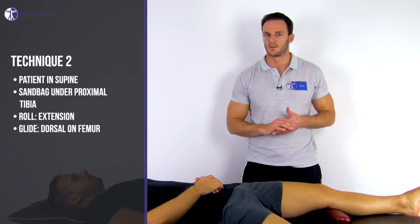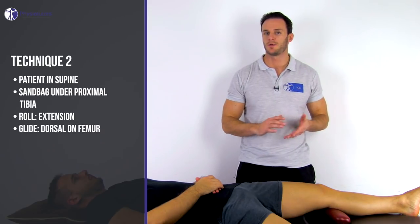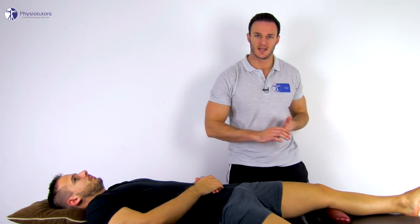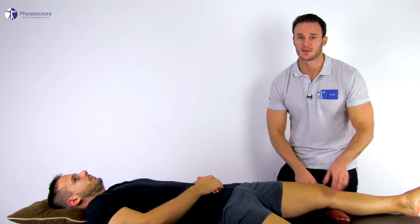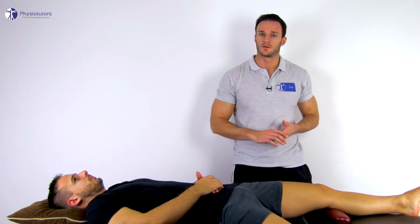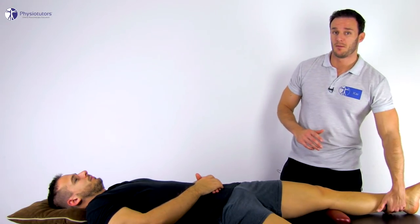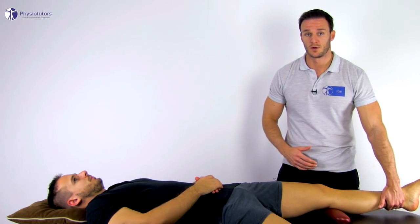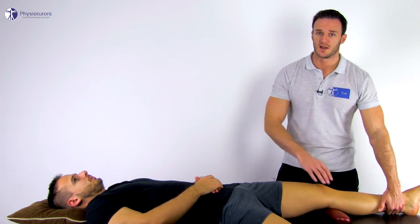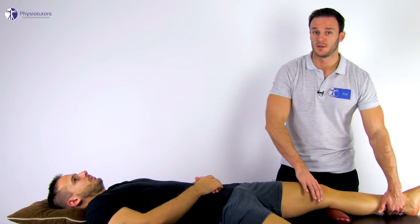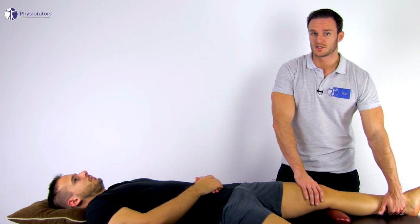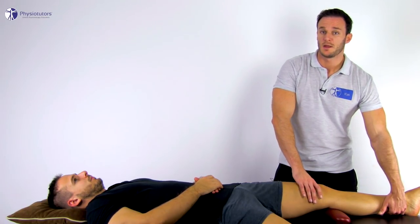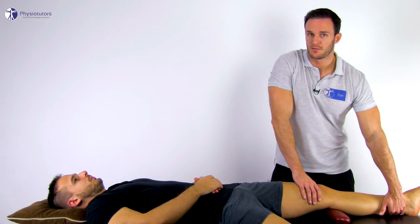For end range limitations from around zero degrees to hyperextension there are two options. Have your patient in supine position with a sandbag under the proximal tibia of the leg to be examined. Grab onto the patient's distal tibia above the ankle with one hand from medially. This hand will induce a ventral roll into extension. Place your other hand on the patient's distal femur. This hand will glide the femur dorsally in relation to the tibia as the tibia is blocked by the sandbag. Then perform an equal rolling glide with both hands.